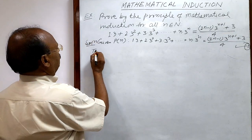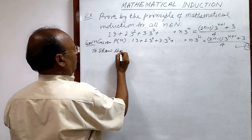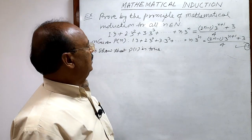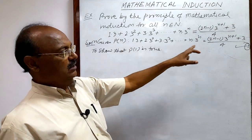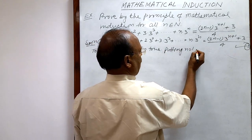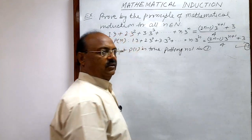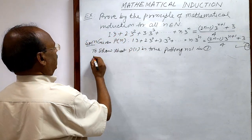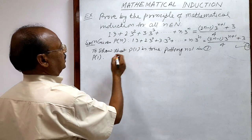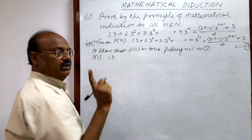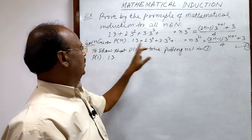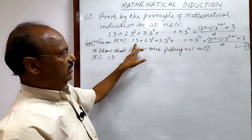First step is to show that P(1) is true. We get P(1) by putting n = 1 in relation number 1. In the left hand side, since the total number of terms is n, if we take n = 1 we have to take only one term — the first term.